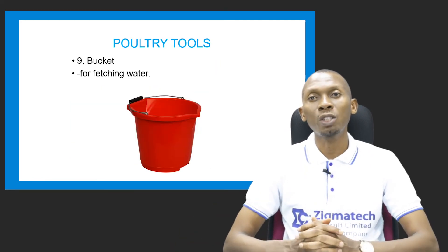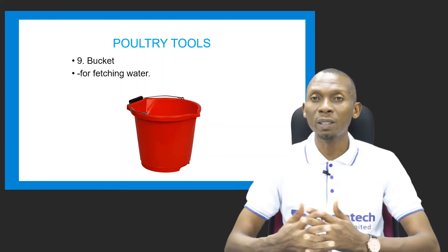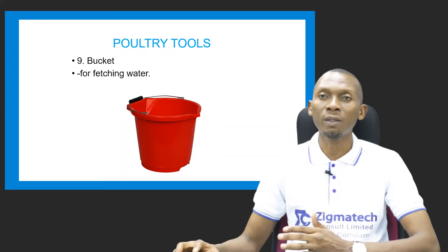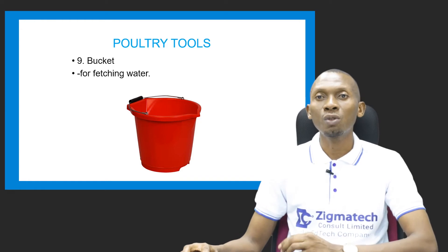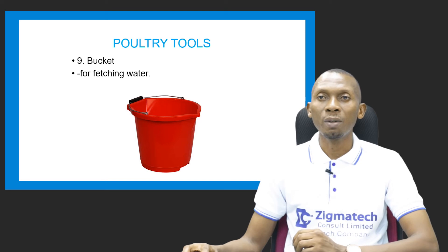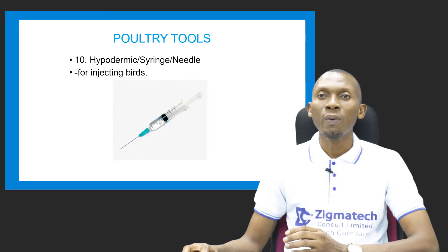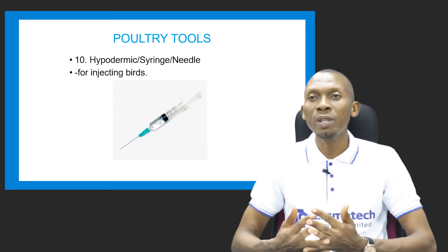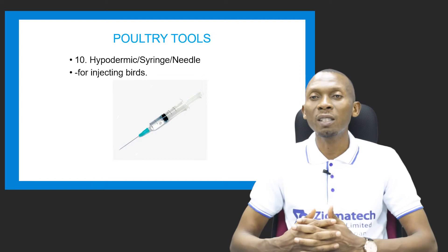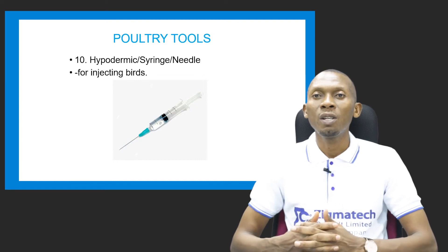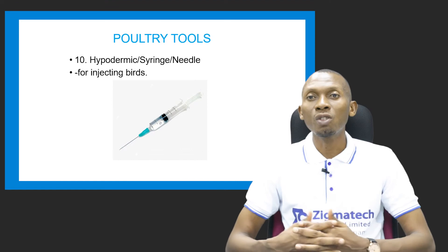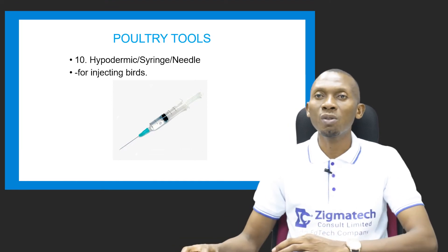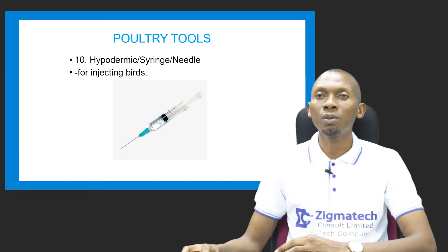We have the bucket, which is used for fetching water to administer to the watering trough for poultry birds. We have the hypodermic syringe or needle for injecting birds during vaccination or certain treatments.